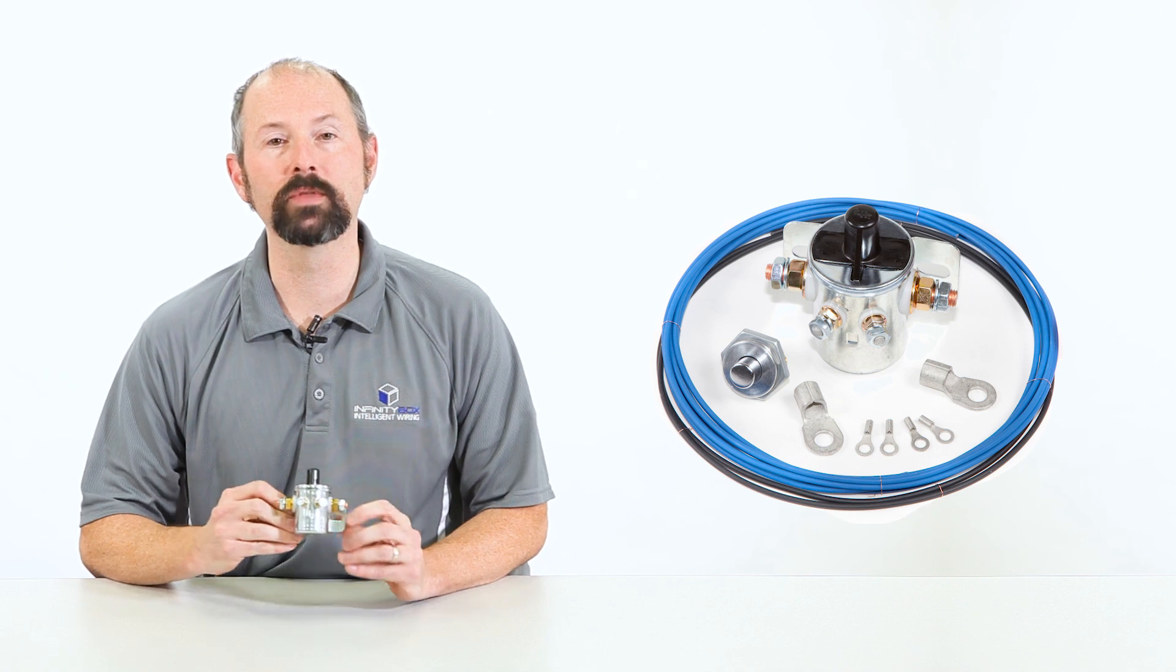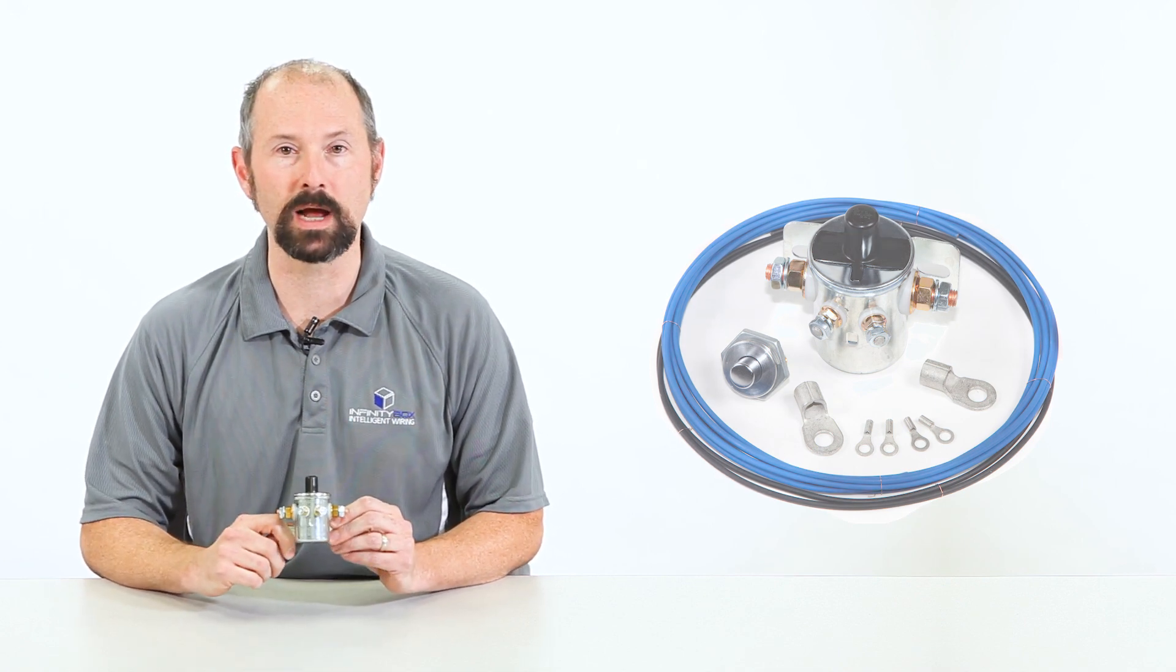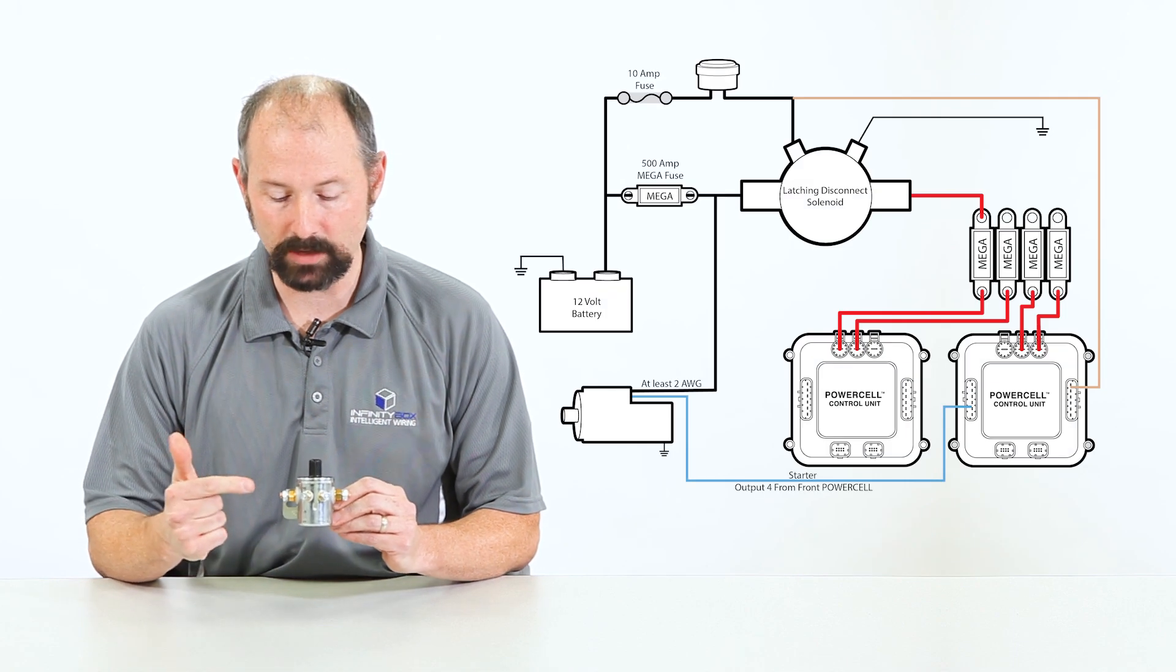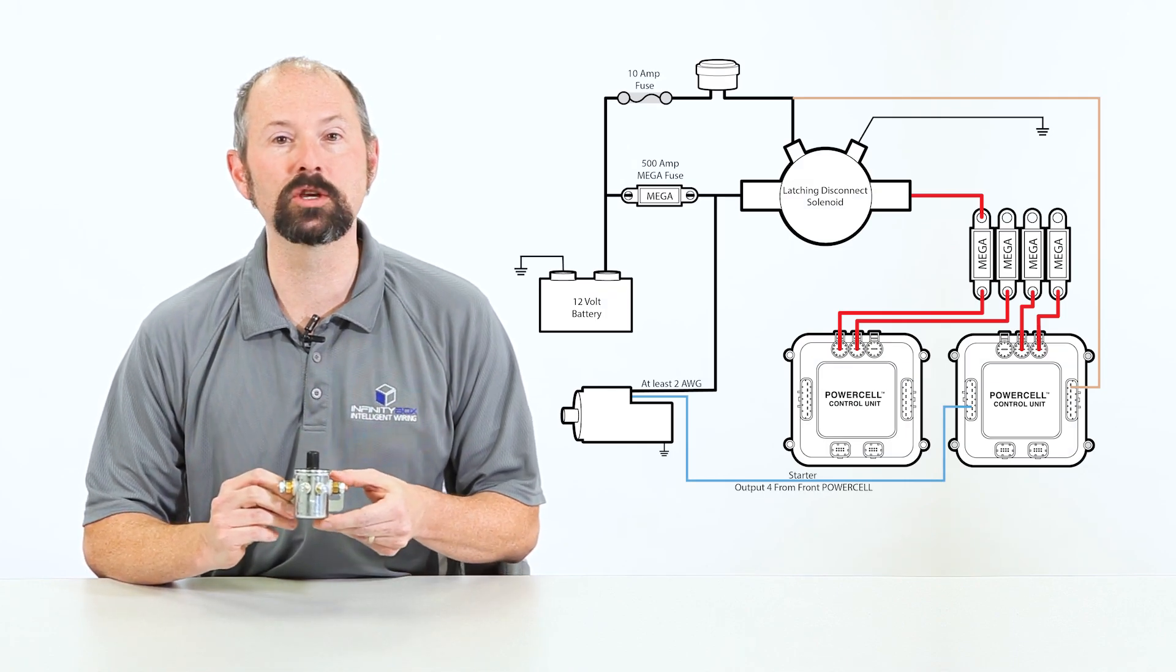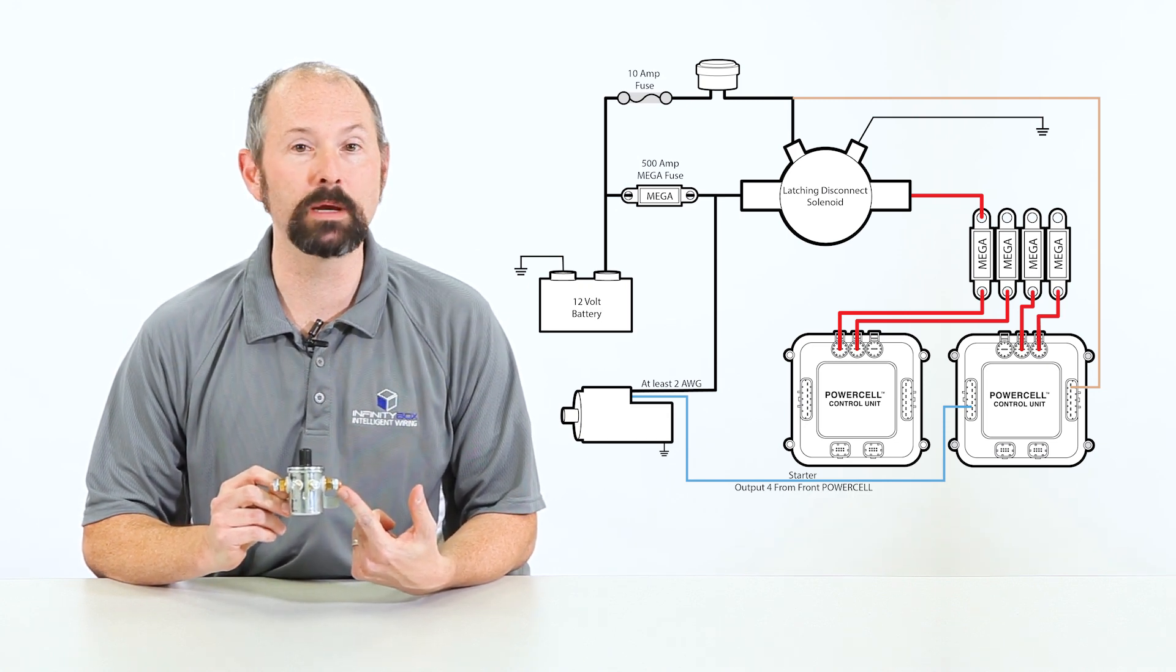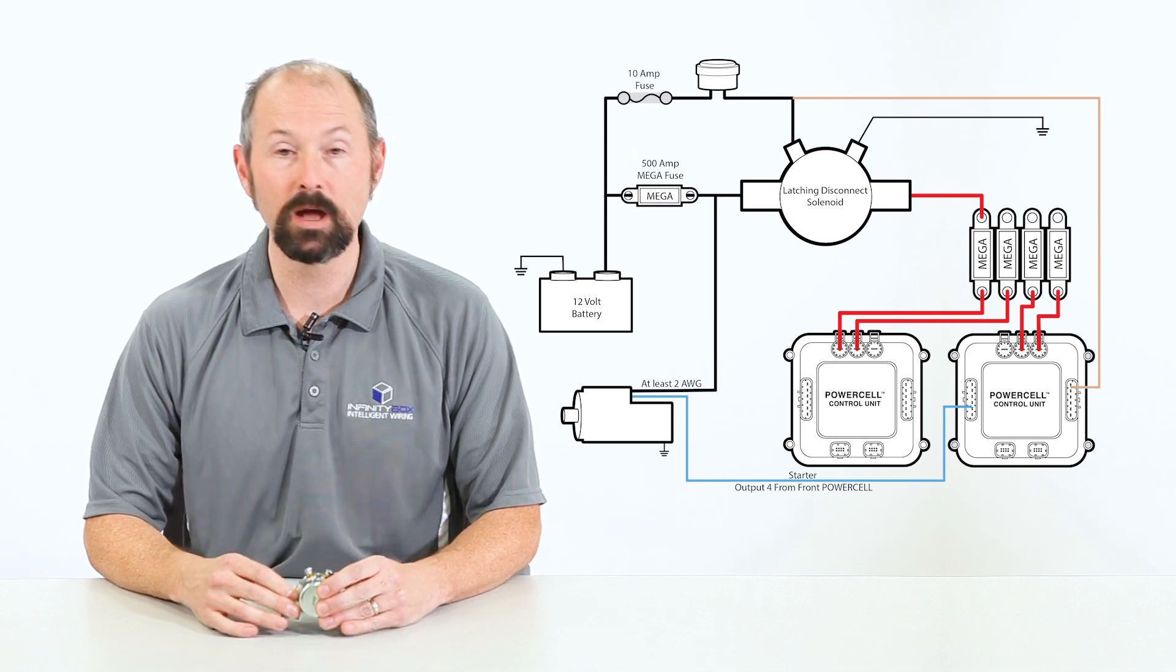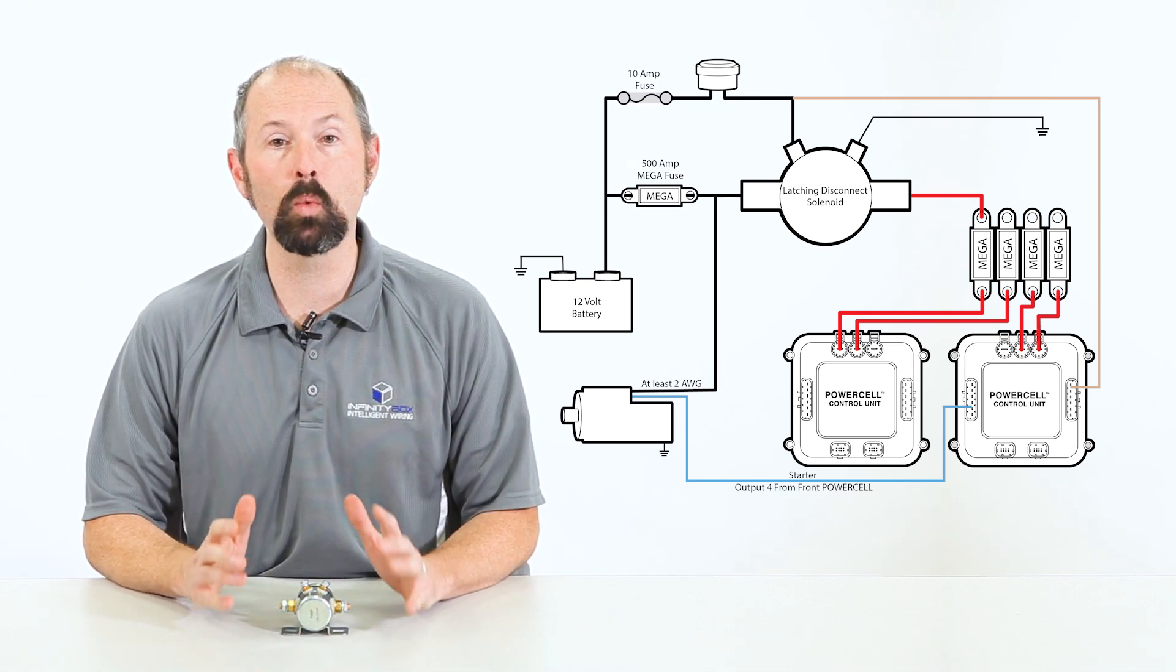The core of the in-reserve active battery management system is this special latching solenoid. This latching solenoid connects to the battery on one end, and then all of the things that you want to disconnect connect on the other end. So that would be power to your Infinity Box system, power to your EFI system, maybe power to your audio, anything that you want to disconnect.